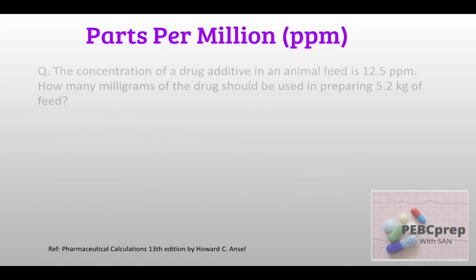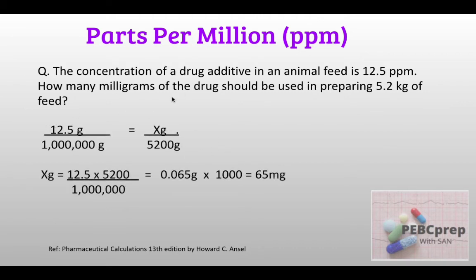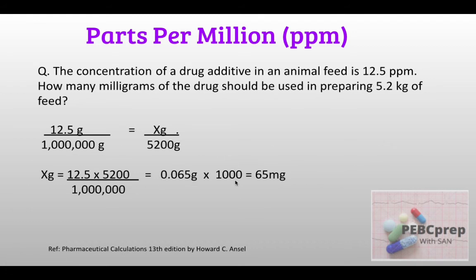Next question: the concentration of a drug additive in animal feed is 12.5 parts per million. How many milligrams of the drug should be used in preparing 5.2 kg of feed? We convert 5.2 kg to 5,200 grams. Setting up: 12.5 grams in 1,000,000 grams, x grams in 5,200 grams. Solving gives 0.065 grams, which we multiply by 1,000 to convert to milligrams — the answer is 65 milligrams.